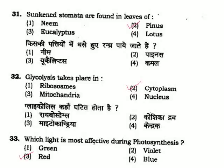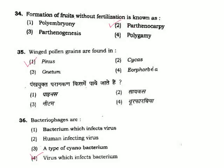Question 32: Glycolysis takes place in — glycolysis occurs in the cytoplasm and the Krebs cycle is in the mitochondria. Question 33: Which light is most effective during photosynthesis? The most effective light is red light. Option 3.